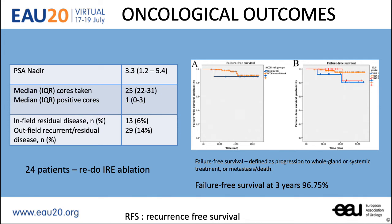In-field recurrence was 6%, and out-of-field recurrence was 14%, and these included the original 20 on our learning curve. 24 patients had redo irreversible electroporation, of which 75% were successful. Overall, at 3 years of follow-up, we had a 96.75% progression to whole gland or systemic treatment failure-free survival.